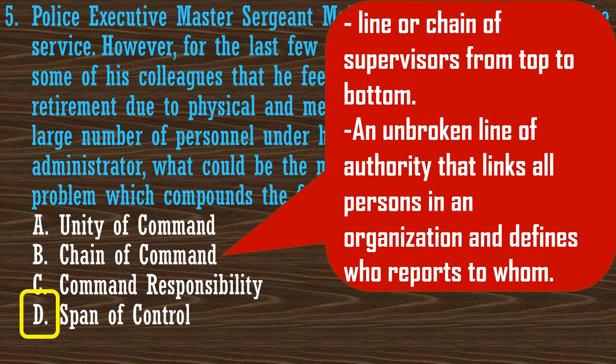Because of the chain of command, there are proper channels. In a proper and orderly organization, there must be a line of authority — the hierarchy visible in what we call the scalar chain principle. This is related to the up-and-down hierarchy of authorities, particularly in matters of communication. Command responsibility means the commander or leader of a group, unit, or office is directly responsible for any act or omission of subordinates in relation to the performance of their official duties.